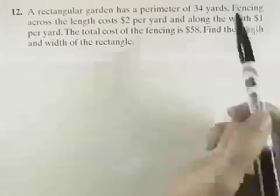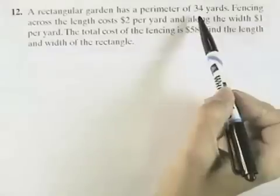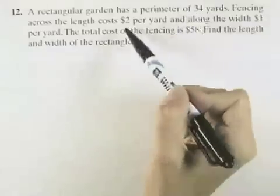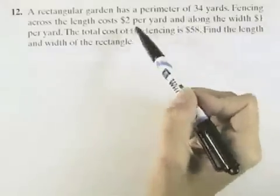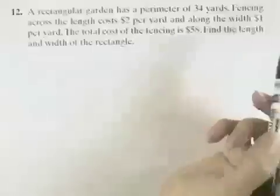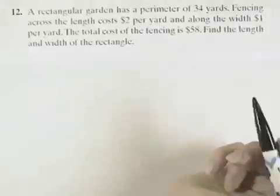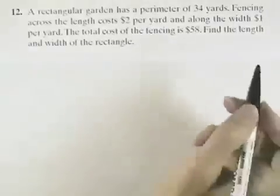A rectangular garden has a perimeter of 34 yards. Fencing across the length is $2 per yard and across the width is $1 per yard. The total cost of the fencing is $58. Find the length and width of the rectangle.